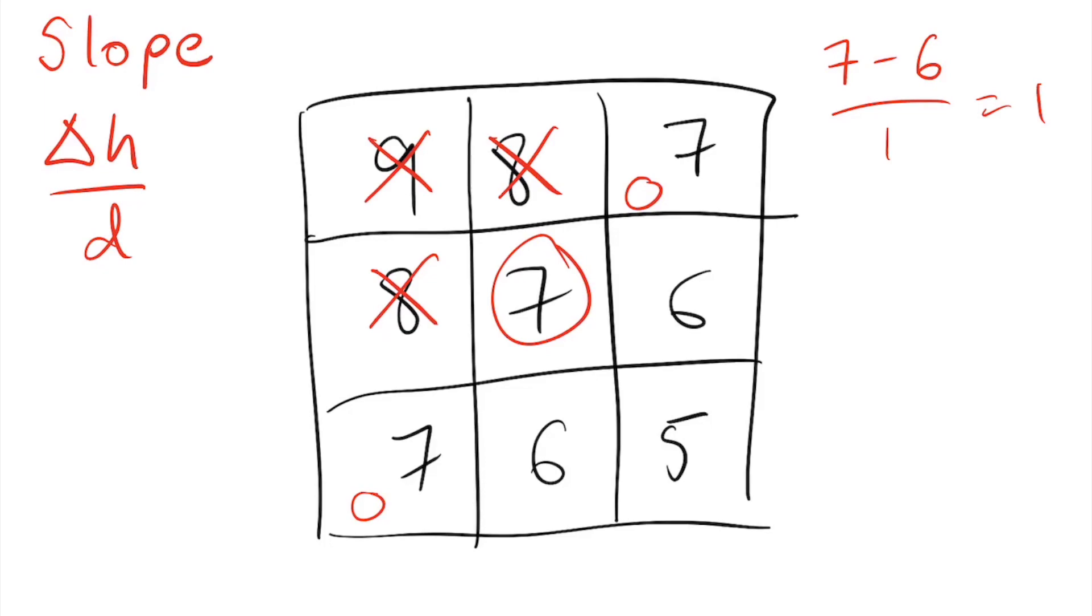Finally, for its neighbor with an elevation of 5, we need to consider that the distance between the cells is the square root of 2, and so the slope is given by 7 minus 5 divided by the square root of 2, which is also equal to the square root of 2, or about 1.41. Since the downward slope is steepest in the direction of this last neighbor, the flow direction is assigned towards it.